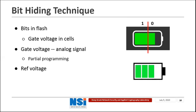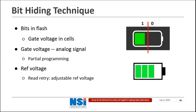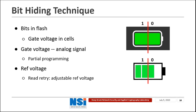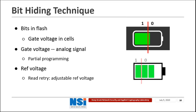Two special techniques help in hiding extra bits in NAND Flash. The first one is partial programming, which allows us to increase the gate voltage of NAND Flash cells gradually so that we can set its gate voltage to the value we want. Another technique is called read-retry, which allows us to adjust the reference voltage and read different bits from one cell. For example, we charge a cell with partial programming to have some gate voltage. With the original reference voltage, the cell stores a bit zero. However, when we change the reference voltage to be larger than the gate voltage, this cell stores a bit one. We can also decrease the reference voltage so that it stores a bit zero again.